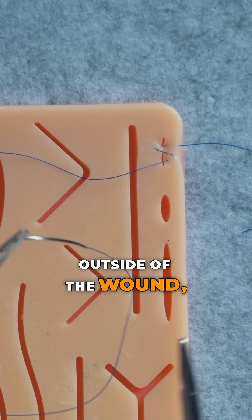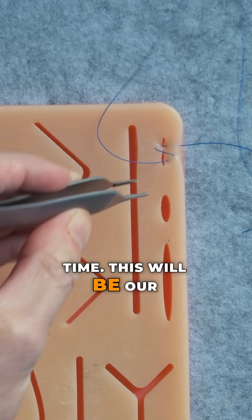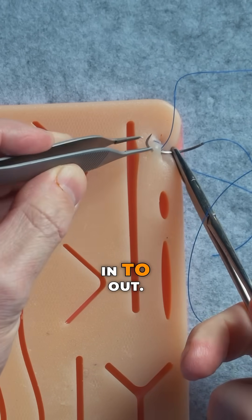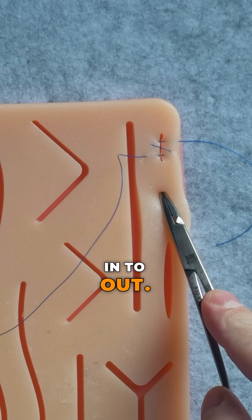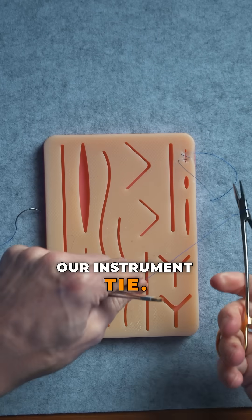Then with a needle outside of the wound, we cross it one more time. This will be our final bite. In to out. And we complete it with our instrument tie.